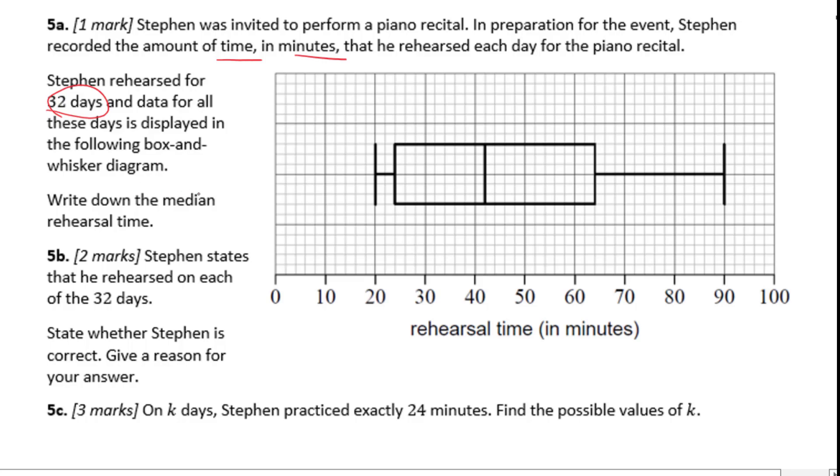Write down the median rehearsal time. Since this is a whisker plot diagram, the median is this number here. Be careful about the unit. This is a 10, so one unit represents 2 minutes. 42 minutes. So we have 42 minutes is the median.